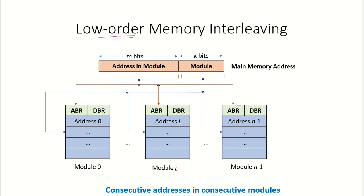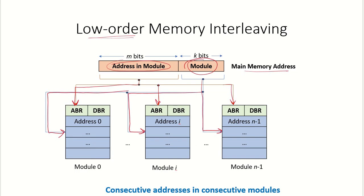In low order memory interleaving, the lower bits of the main memory address specify the module number, and the high order bits are stored in the address buffer register to specify the particular address within that module. Here, consecutive addresses are stored in consecutive modules: address 0 is in module 0, address 1 in module 1, address 2 in module 2, address 3 in module 3, and so on.